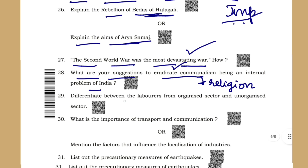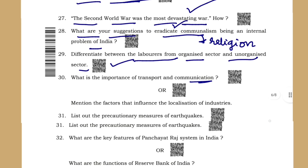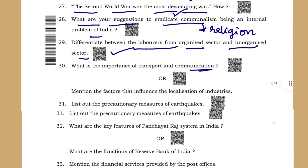The difference between labourers from organized and unorganized sectors is very important. What is the importance of transport and communication? Then mention the factors influencing the localization of industry — these are important questions. List out the precautionary measures for earthquakes.